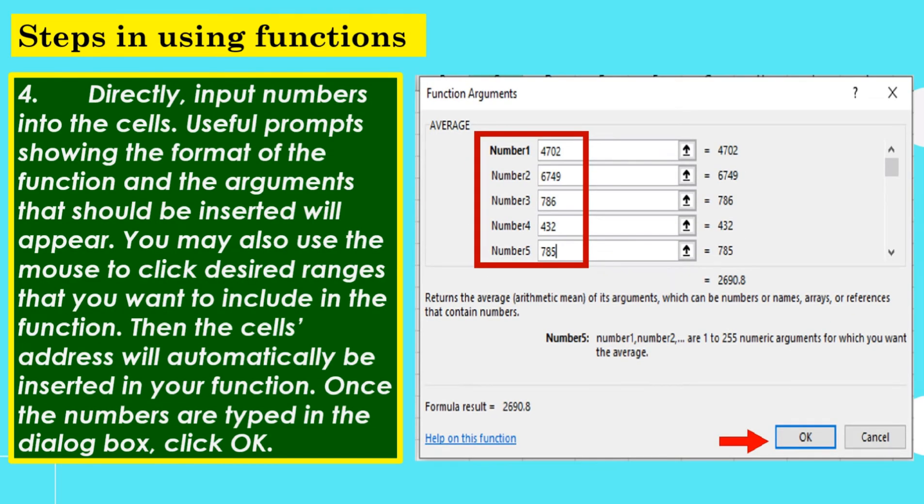Step 4. Directly input numbers into the cells. Useful prompts showing the format of the function and the arguments that should be inserted will appear. You may also use the mouse to click desired ranges that you want to include in the function. Then, the cell's address will automatically be inserted in your function. Once the numbers are typed in the dialog box, click OK.